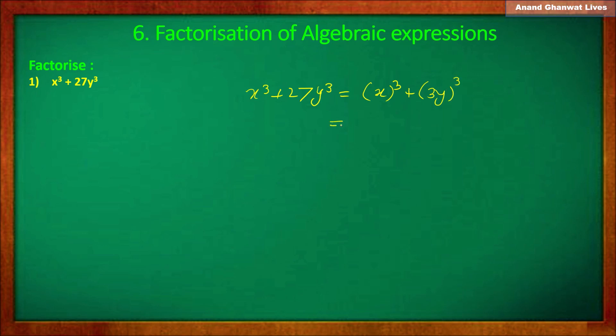So using the factors of a cube plus b cube, the first bracket is (a plus b), that is (x plus 3y), and the second bracket is (a squared minus ab plus b squared).